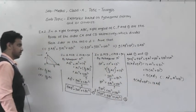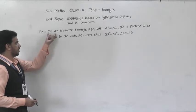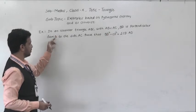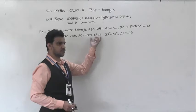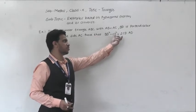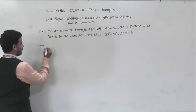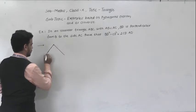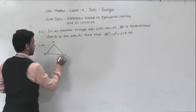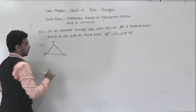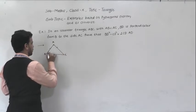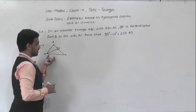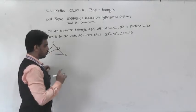Next example: in an isosceles triangle ABC with AB equal to AC, BD is perpendicular from B to the side AC. Prove that BD squared minus CD squared equals 2 CD into AD. We draw figure: ABC is an isosceles triangle with AB equal to AC, and BD is perpendicular to AC.